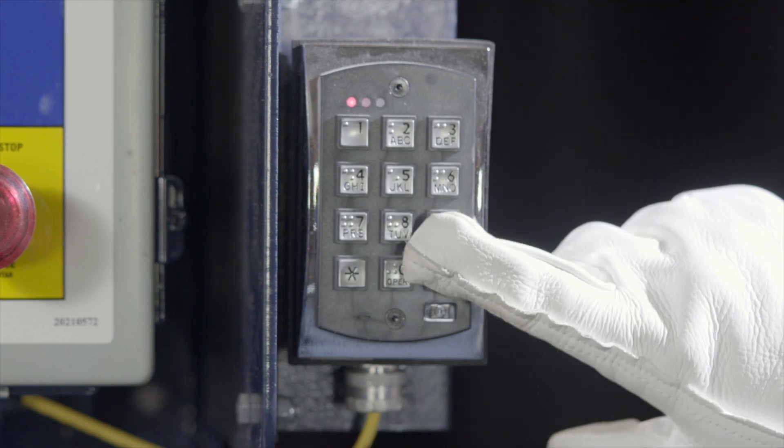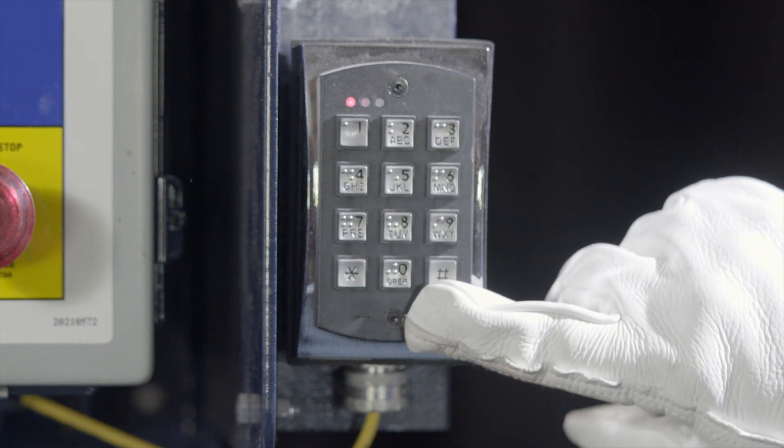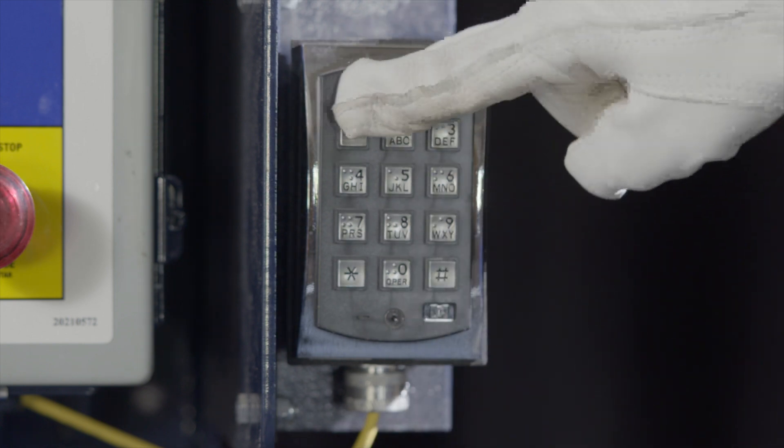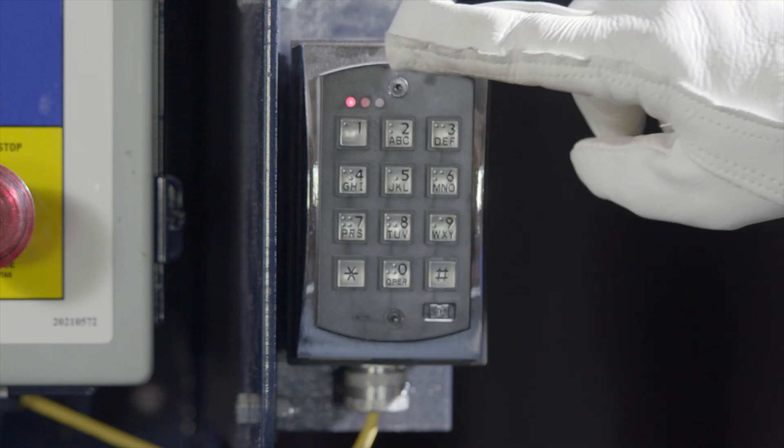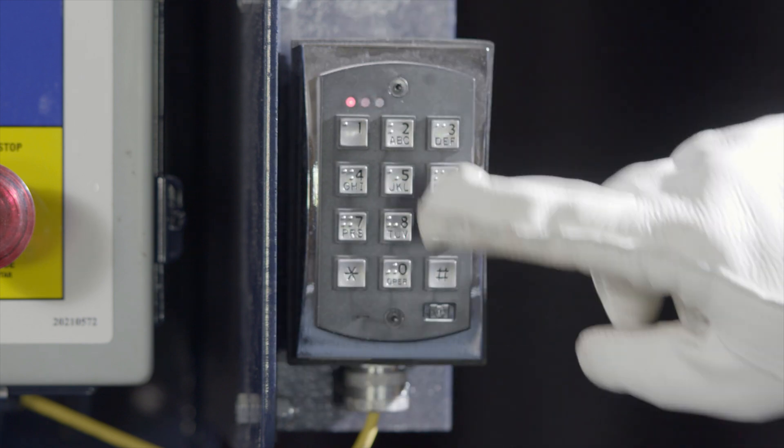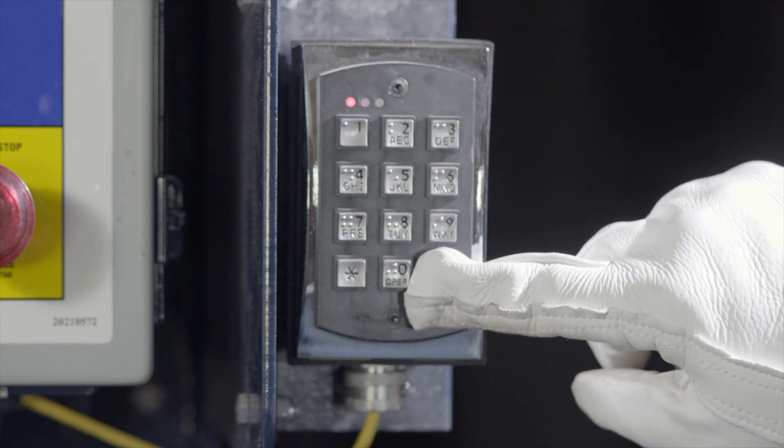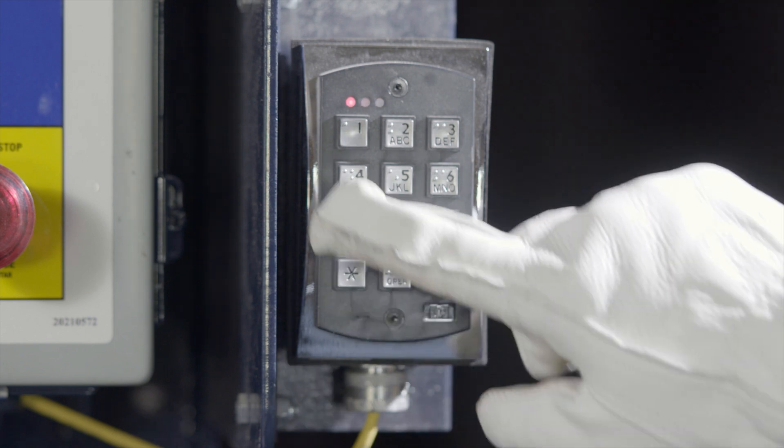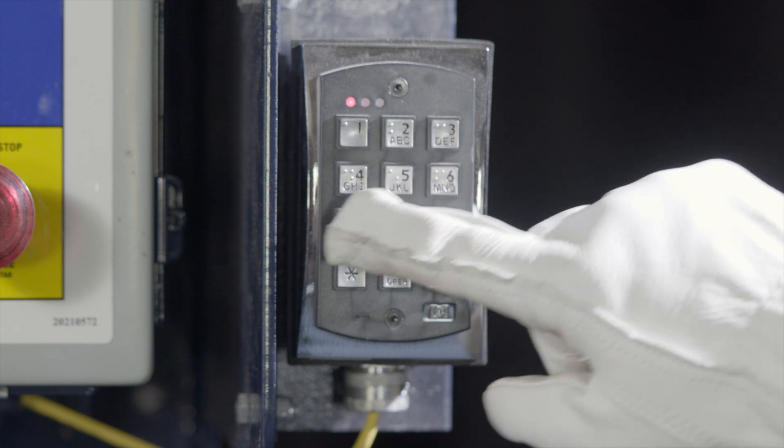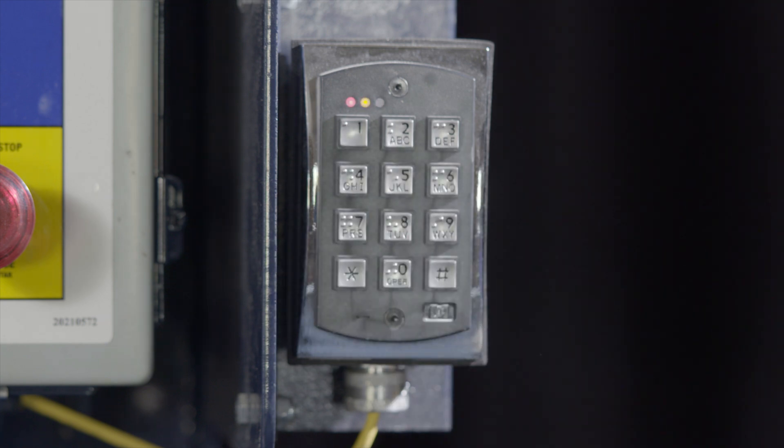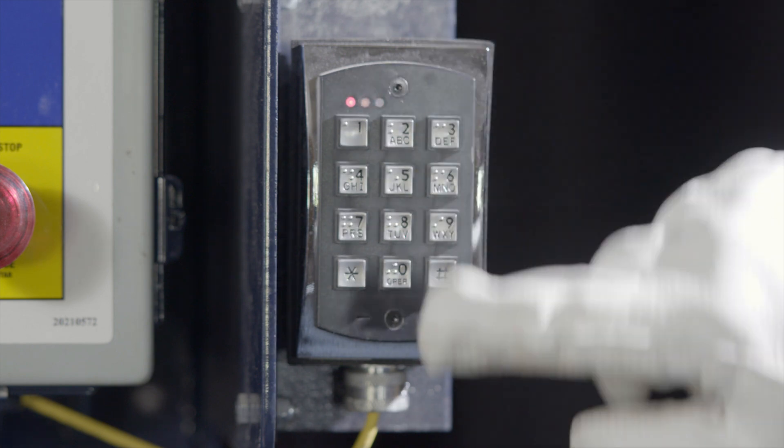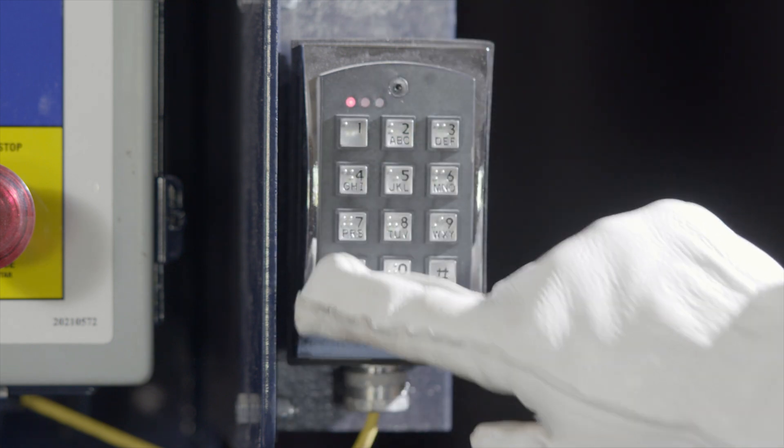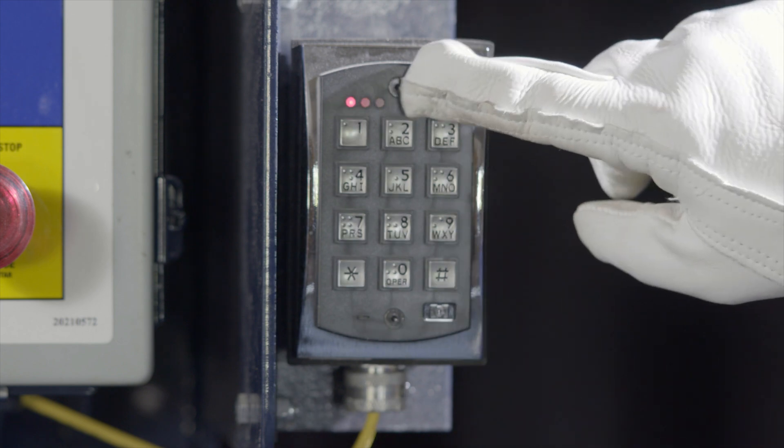Start by pressing 99 pound and then enter the default master code, 1, 2, 3, 4, followed by the asterisk. The yellow LED will flash slowly. Enter the new user's number 3 through 500, followed by the pound sign. Next, enter a four-digit code followed by an asterisk. The yellow LED will flash fast. Re-enter the four-digit code followed by the asterisk. The yellow LED will flash slowly.